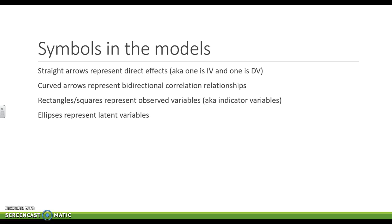If we have a rectangle or a square, these are observed variables. They're also called indicator variables. And if we have an ellipse, so a circle or oval, that is representing a latent variable.